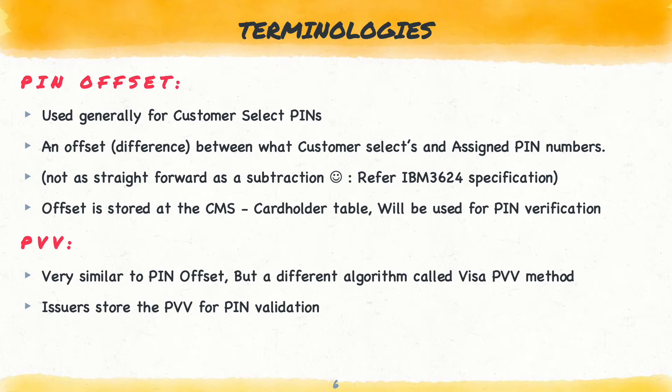The next one is PVV — PIN Verification Value. It is very similar to PIN offset, however the algorithm is a bit different. It is VISA's PIN Verification Value algorithm. The purpose of both PIN offset and PVV is to store these values in the cardholder database, which will subsequently be used for PIN validation.